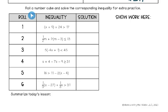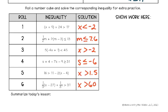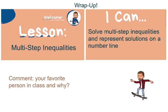For the last section, roll a number cube and solve the corresponding inequality for extra practice. If you don't have a die, just pick one, two, or all of them to do. Take a moment, try at least one, then press play to see the answers. Alright, here are your answers — pause if you need to check. Today we learned all about multi-step inequalities. Now you should be able to solve them and represent solutions on a number line. Go back to the calendar for any remaining assignments.